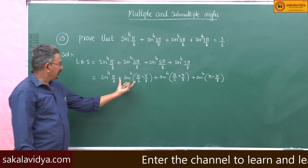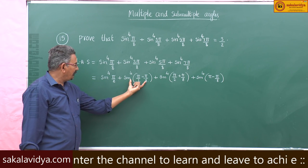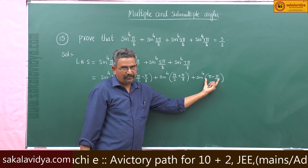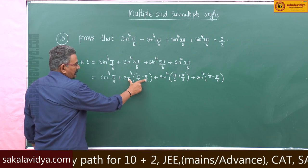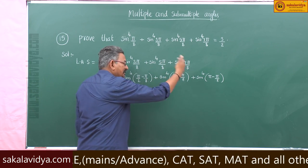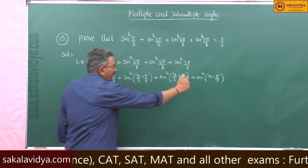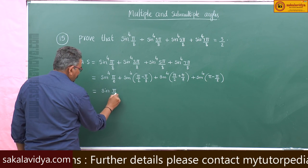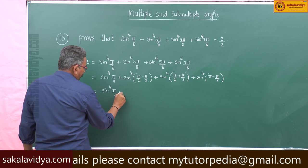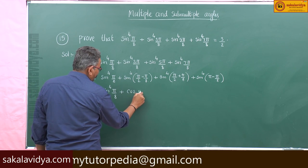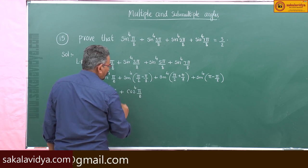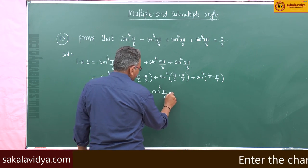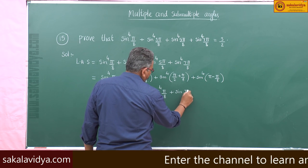Now here, sin(90° − θ) = cos θ, sin(90° + θ) = cos θ, and sin(180° − θ) = sin θ. Applying these identities, we get sin⁴(π/8) + cos⁴(π/8) + cos⁴(π/8) + sin⁴(π/8).